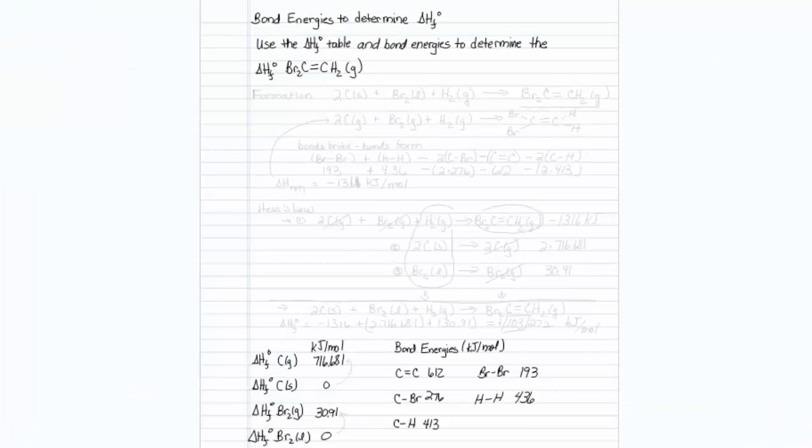This is how to use bond energies and a few correction factors to determine the heat of formation of something unusual. Use the heat of formation table and bond energies to determine the heat of formation of 1,1-dibromoethane.